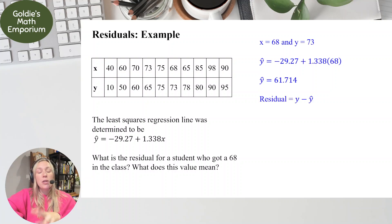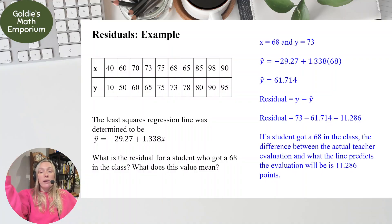Now to find the residual, residual is observed minus predicted. So we're going to take the observed 73, and we're going to subtract the predicted y value of 61.714. This gives us 11.286, and that's the residual. So fun, but we also need to determine what does this value mean. Well, if a student got a 68 in the class, the difference between the actual student evaluation and what the line predicts the evaluation will be is 11.286 points. That's a perfectly good explanation.